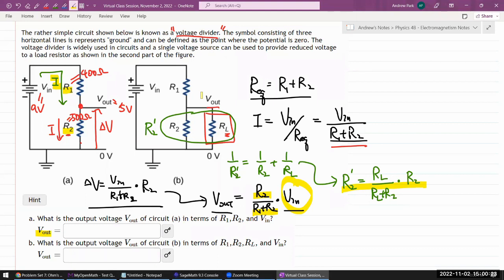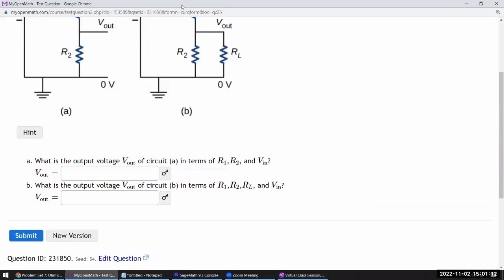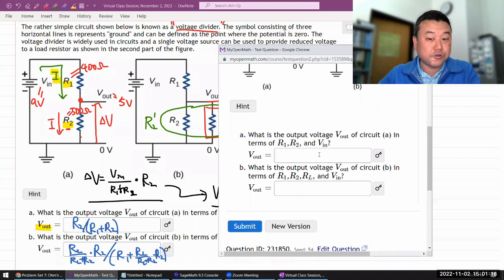So with this value of R2 prime, we can actually just reuse the rest of the stuff. Because if I'm imagining replacing this with a single resistor, then everything is back to what this was. So here the answer was R2 divided by R1 plus R2. And here I can basically, wherever I see R2, I can replace them with R2 prime. So it'll be RL over RL plus R2 times R2, that's R2 prime, divided by R1 plus the same thing, RL over RL plus R2 times R2.